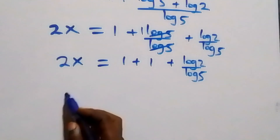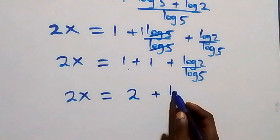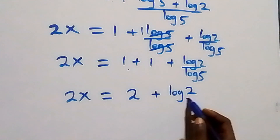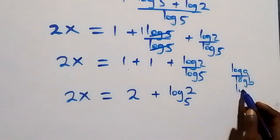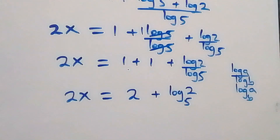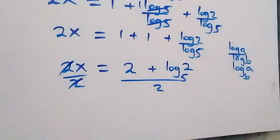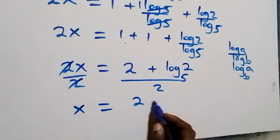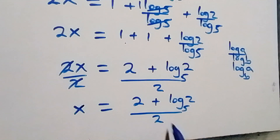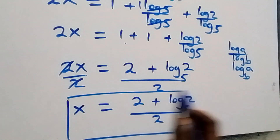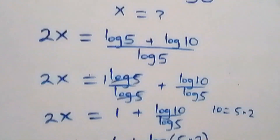So we have 2x equals to 2 plus log 2 over log 5. By the change of base rule — log a over log b can be written as log a to base b — this becomes 2x equals to 2 plus log₅2. Dividing both sides by 2, we have x equals to (2 plus log₅2) over 2. That is the value of x in this problem.